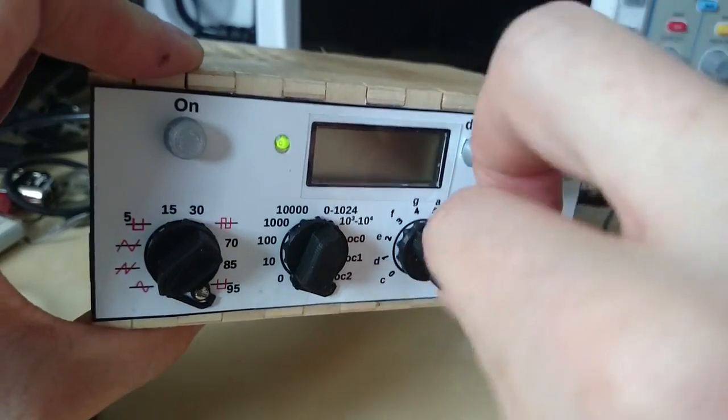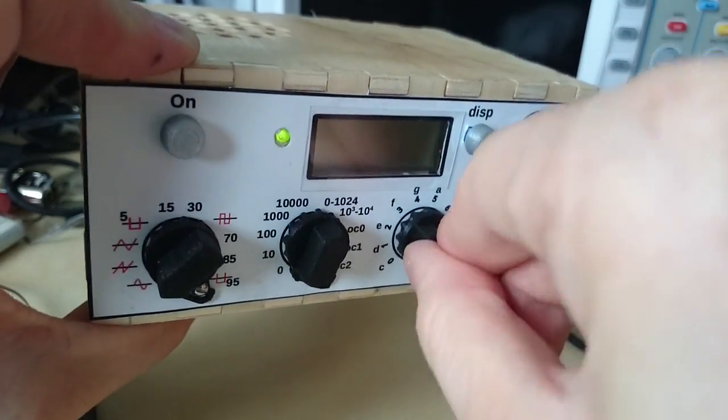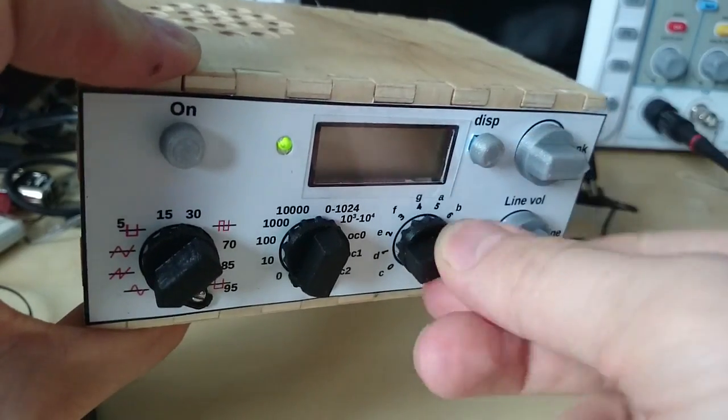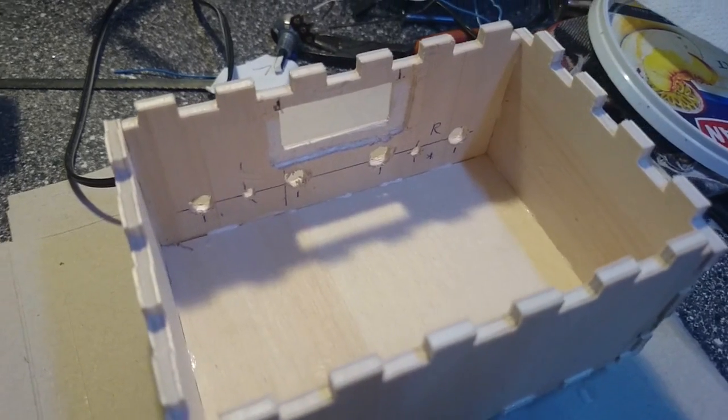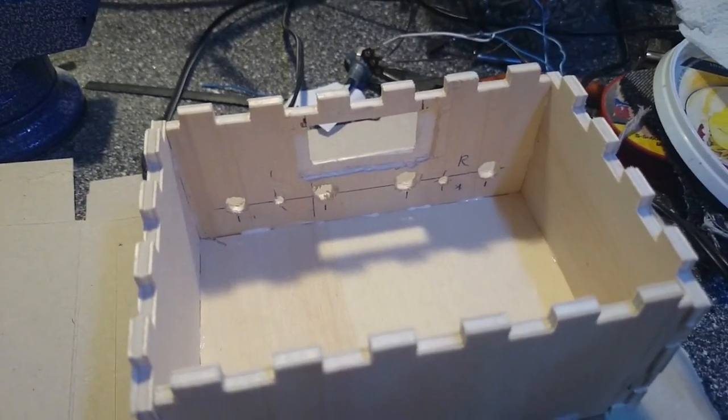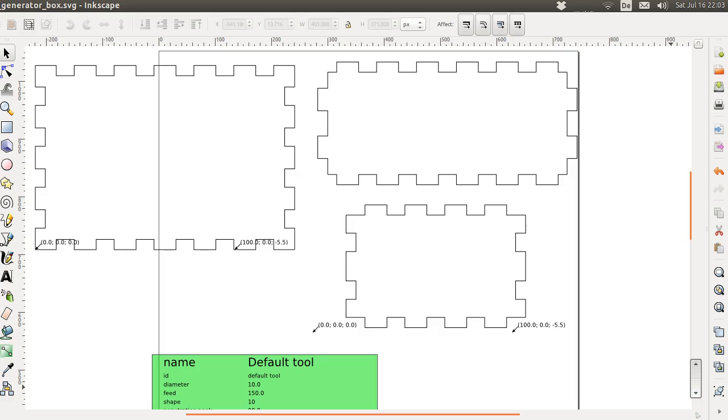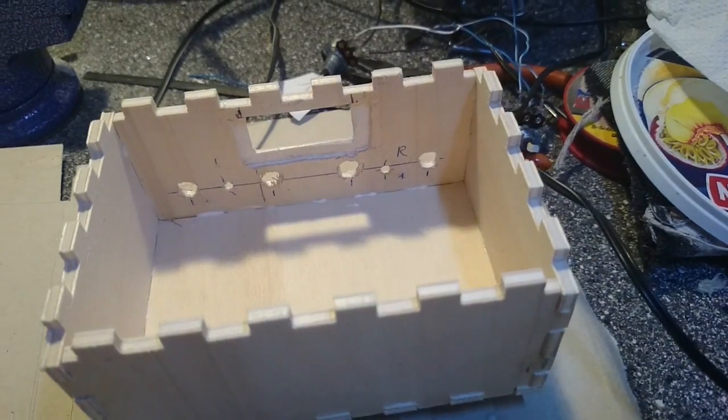The third knob has no spring, because some modes work better without. The right two knobs are for speaker volume and line volume. The case is made from cheap plywood. I designed it with Inkscape and the plug-in box maker, and then cut it out with a CNC router.